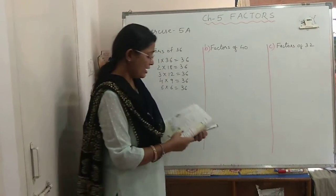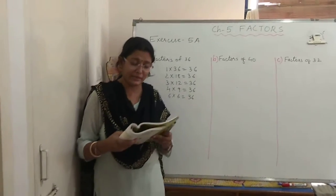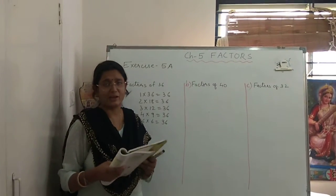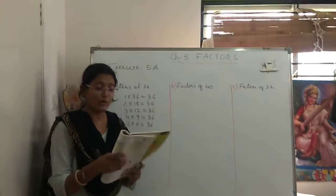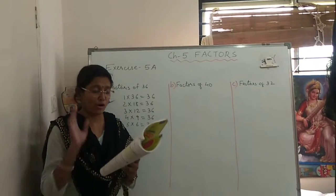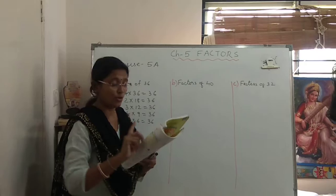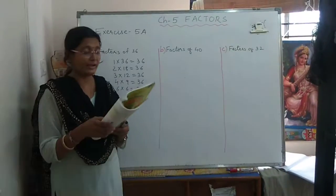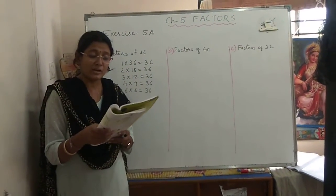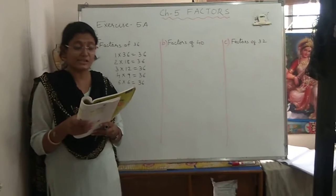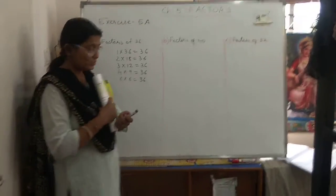Number B now. In number B they have told, the PT teacher is making a class of 40 children stand in rows. Now think that you have to go in games period and you are total 40 students, and your PT teacher is making you stand in rows, stand in straight line. What are the different number of rows he can make such that each row has the same number of children? So what you have to do? Again, you have to find the factors of 40.